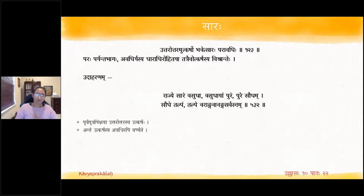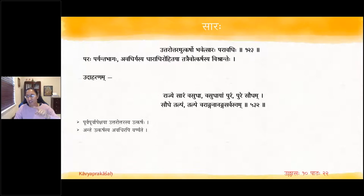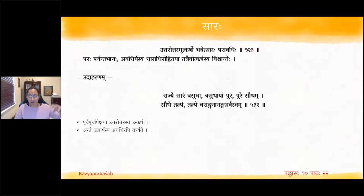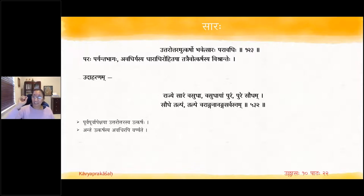Next is Sara Alankara — showing the successive excellence of items one after the other, where each subsequent item is more excellent than the previous. Poorva poorva apekshaya the latter item has greater excellence. At the same time, the paravadi — highest limit — is also mentioned. Tatraiva utkarshasya vishrantih — the series of excellence ends there, at the zenith.